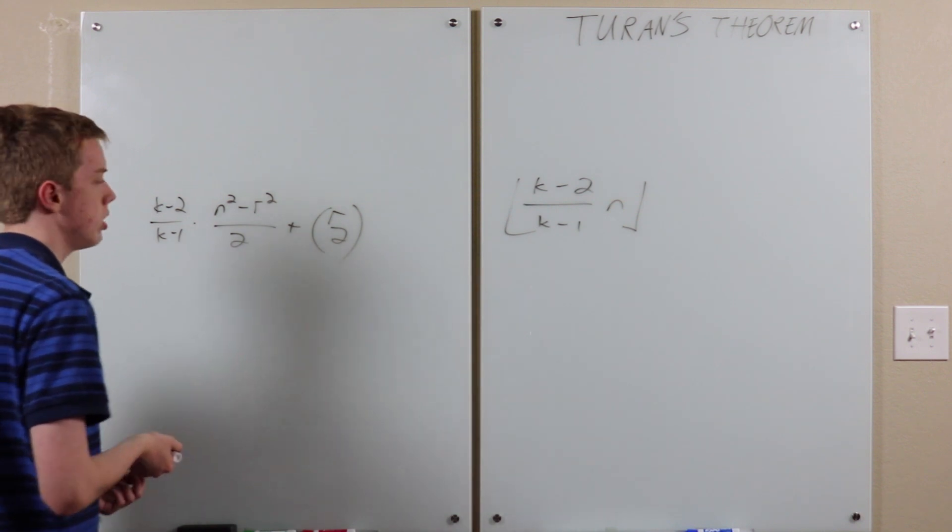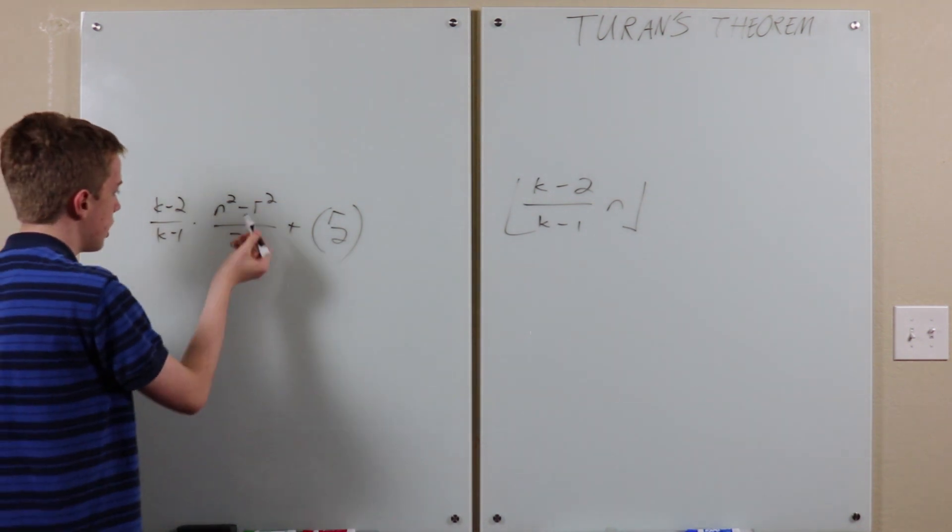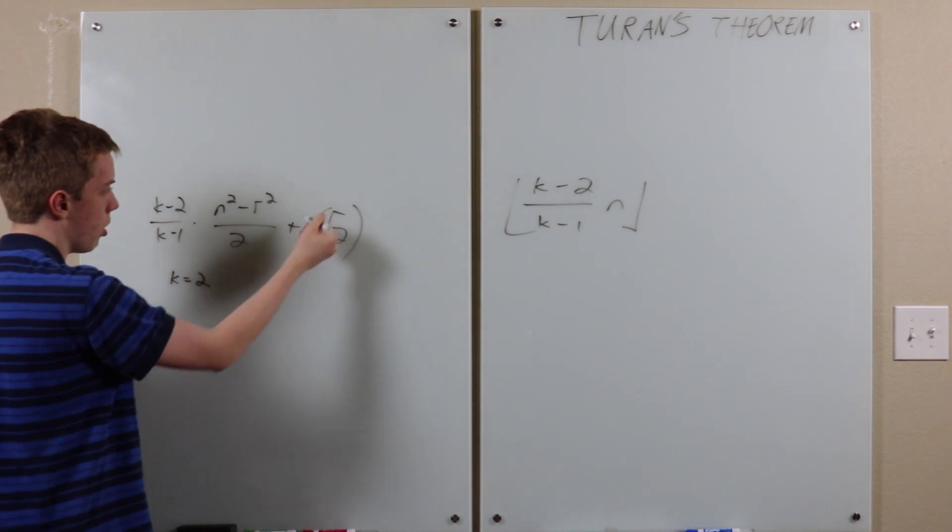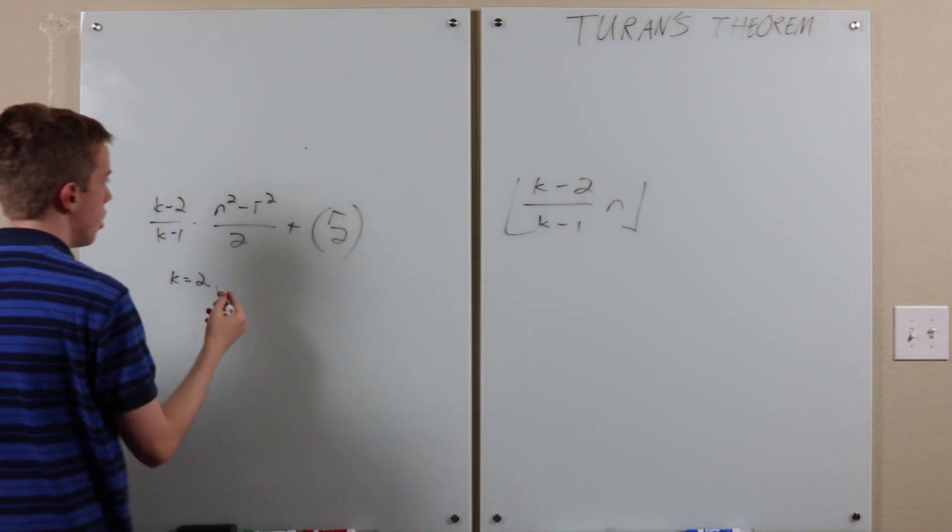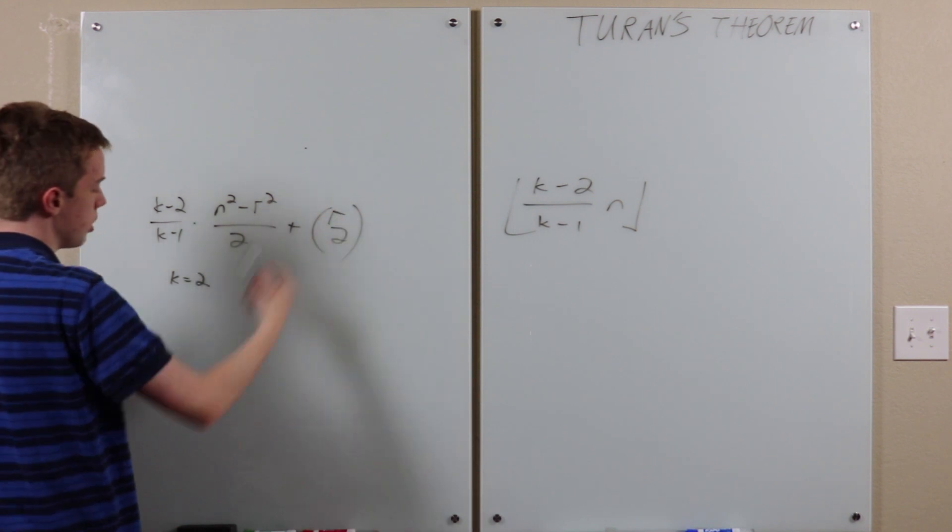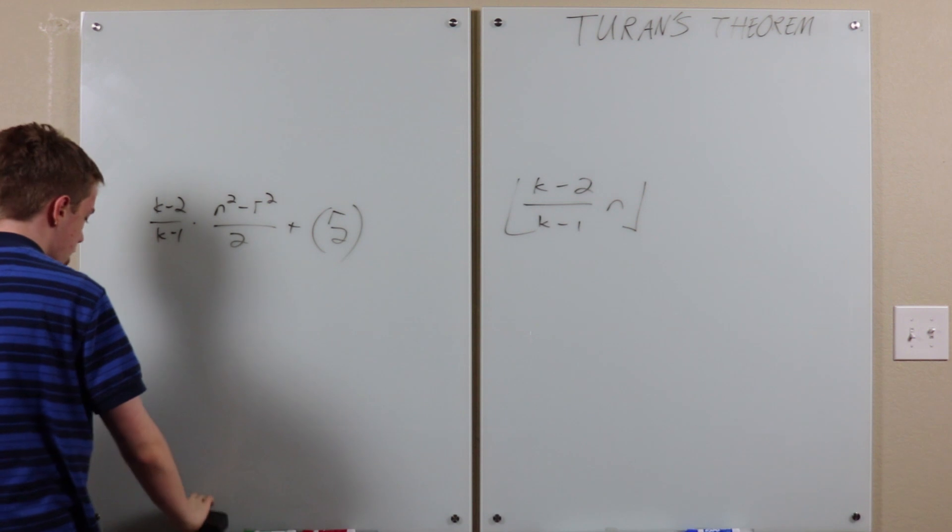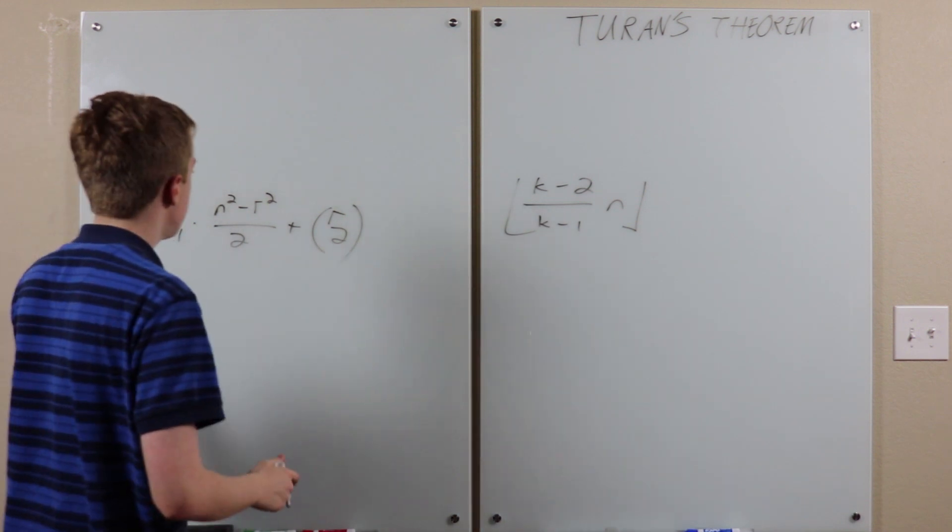Because then, if K equals two, then this equals zero, and this equals zero. So, we can have zero edges in a one vertex graph. Otherwise, R will equal one, and these will still both equal zero. So, the base case of N equals one is trivial when we induct on N. Now, the inductive step.